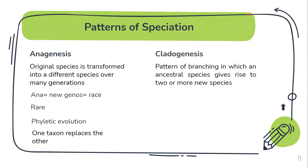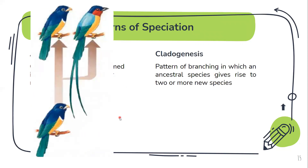The next pattern is cladogenesis — the pattern of branching of the ancestral species. The ancestral species branches out to give two or more new species. If you look here, this is the ancestor that has branched out to give two different species. The word 'clados' means branch.